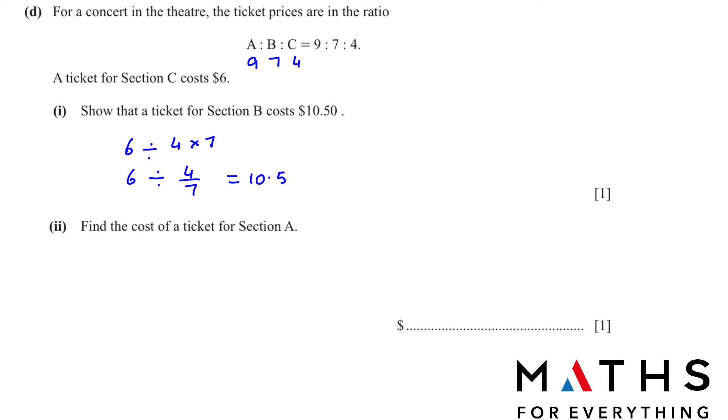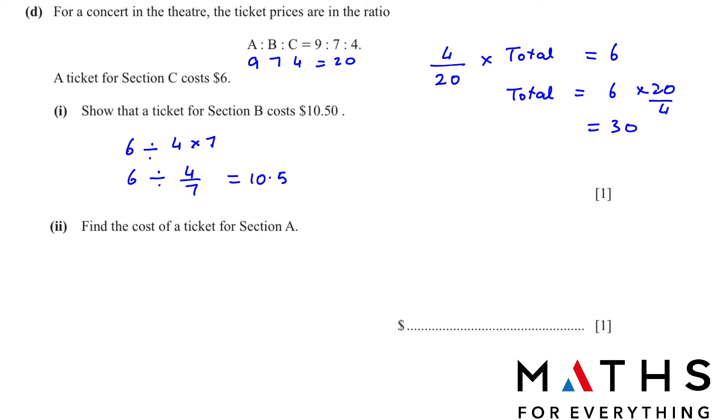This is one way of solving. The other way is a little longer. In that you find out the total first. So 4 parts out of, you add all the parts. 9 plus 7 plus 4 will give us 20. 4 out of 20 of the total price is $6. So what is the total? It will be 6 multiplied by 20 over 4. This will give us 30. Now to find B, how many parts does B have? 7 out of 20 parts. Multiply by 30. This will give you 10.5.